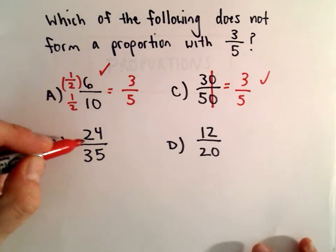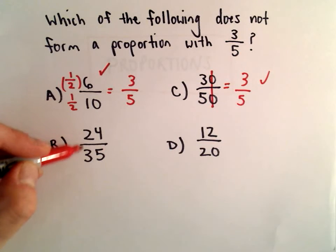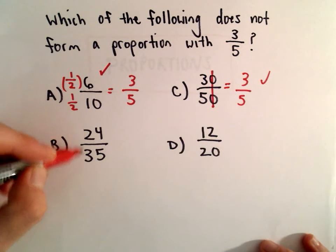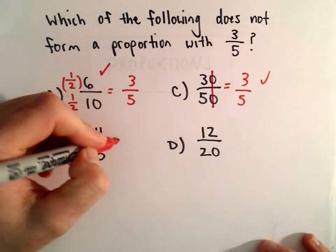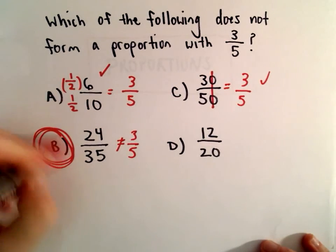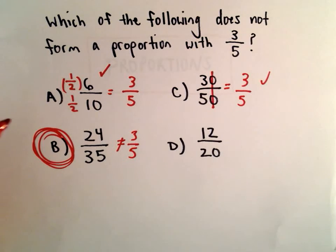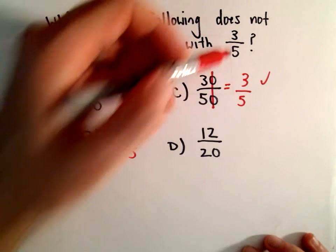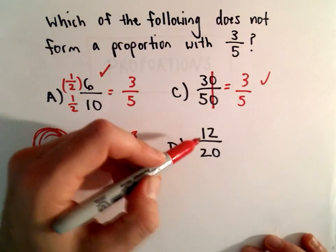Let's see, are there any common factors between 24 and 35? Well, 24 over 35, and I think there's not. This is actually already reduced. Well, 24 over 35 doesn't reduce to 3 over 5, so answer choice B would be our value that doesn't form a proportion with 3 over 5.